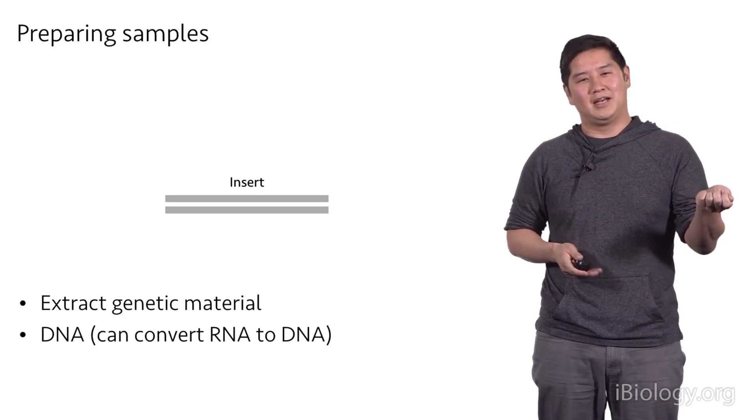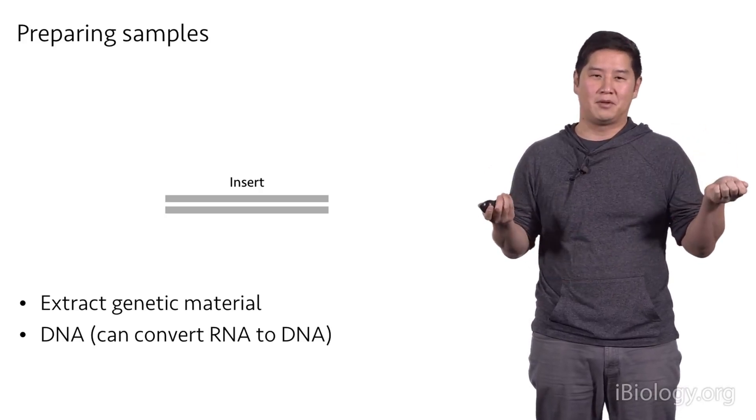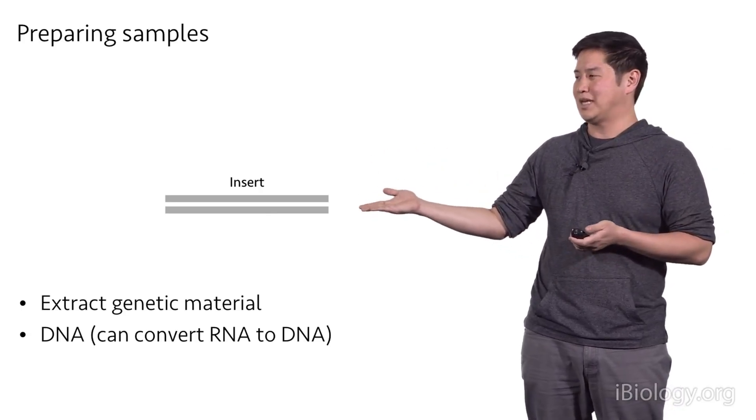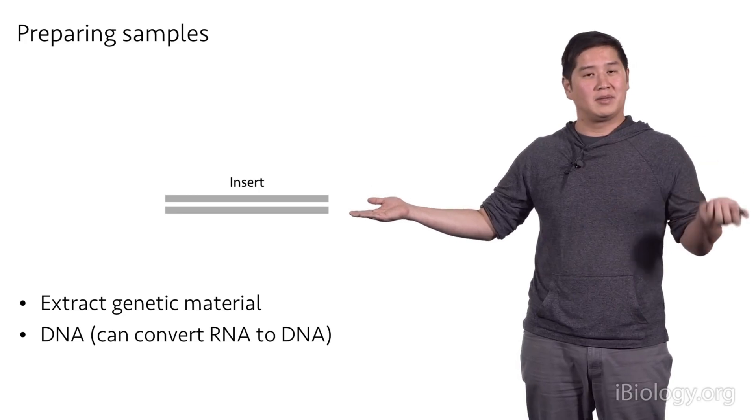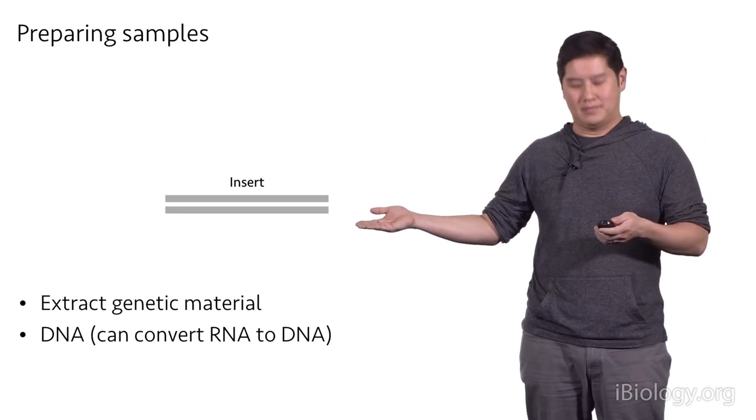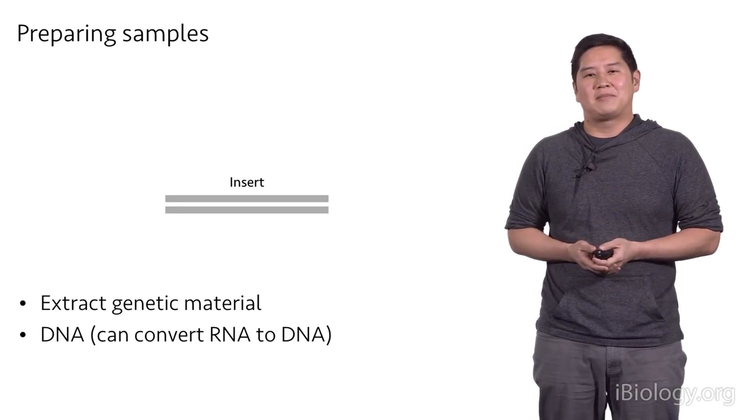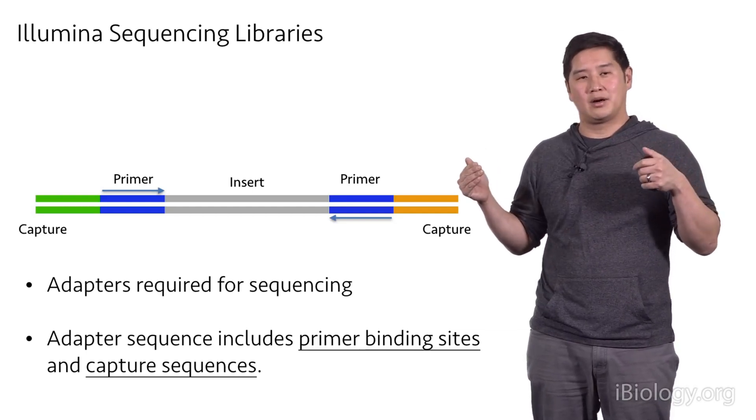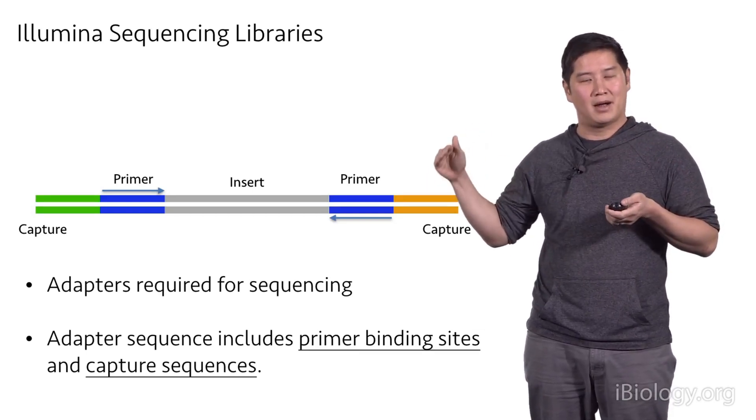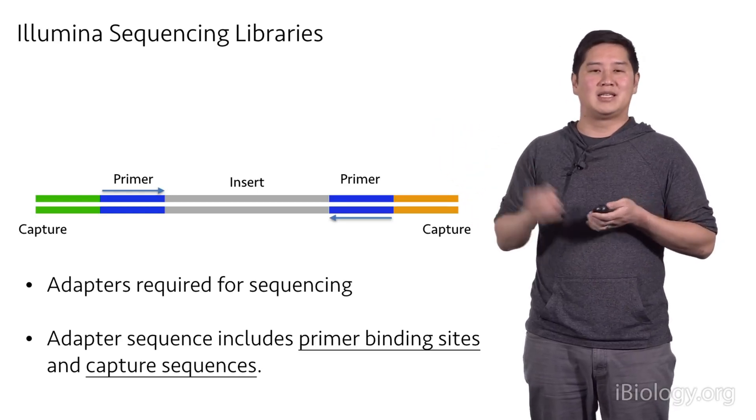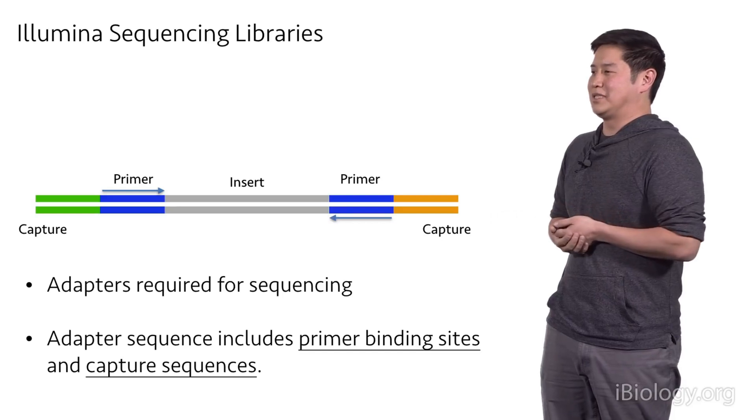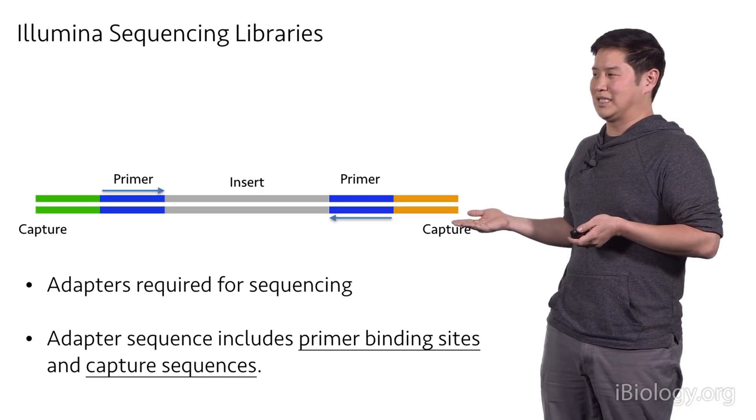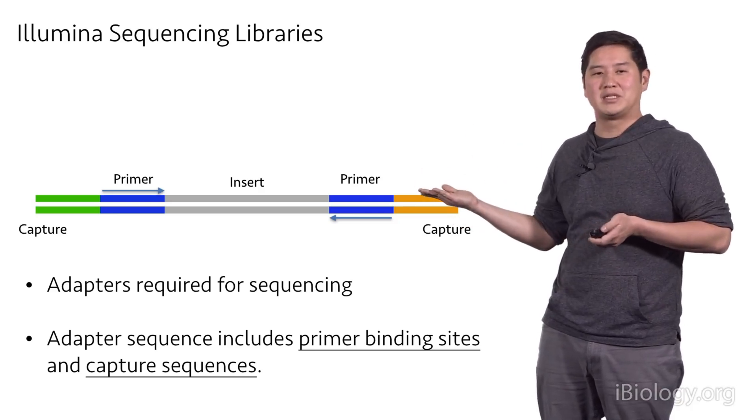So you can't just put DNA into these flow cells and get sequences out. You actually have to prepare your sample. And so there are several steps that occur, but basically what happens is you take your sample that you want to sequence, which is DNA. If you have something like RNA, you can convert it with enzymes into DNA. You take that DNA, and then you have to add on these adapter sequences at the end. So in blue are primer binding sites that allow the sequencing reaction to occur. This is similar to Sanger sequencing, where we needed to have a primer bind for DNA polymerase to move along the template DNA. And then we also have these capture sequences in green and orange. And these allow your sequencing sample to be captured onto the flow cell for sequencing.